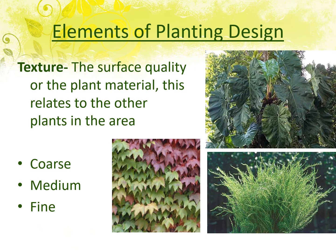Texture is the surface quality of plant material — almost like the roughness of the plant — and can also apply to hardscape or wall materials. We rank texture as coarse, medium, or fine. Big philodendron leaves have a very coarse texture, Boston ivy tends to have a medium texture, and a fine wispy plant like a breath of heaven has a very fine texture. By mixing textures we can create a lot of interest in the landscape even if we're only working with green leafy material and no color.